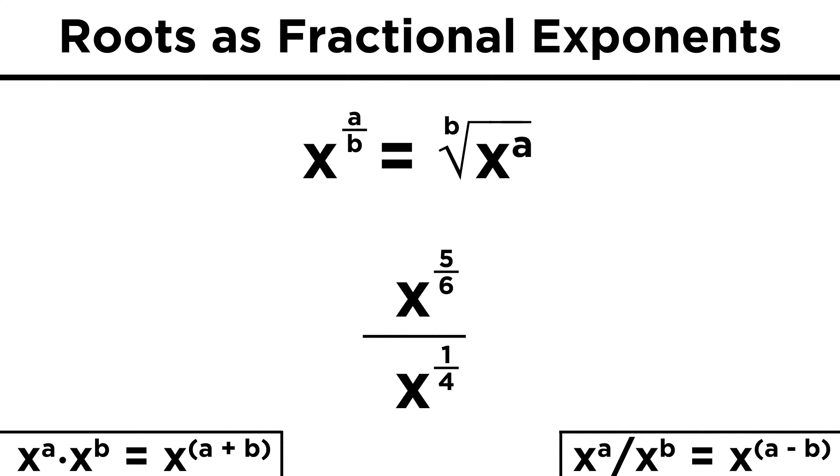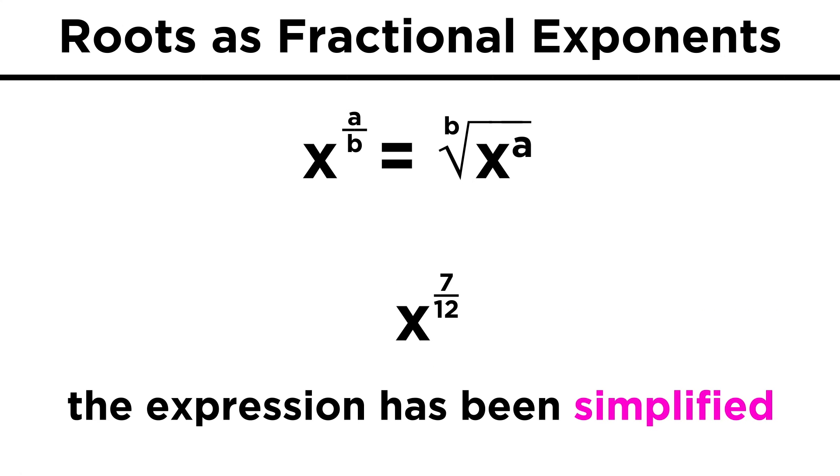Which means we need the lowest common denominator, which will be twelve. So ten-twelfths minus three-twelfths equals seven-twelfths. And there you have the simplified version of the original expression, x to the seven-twelfths power.